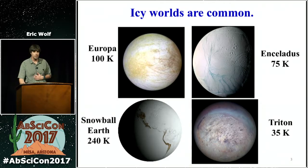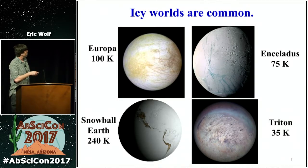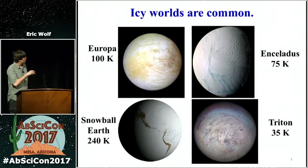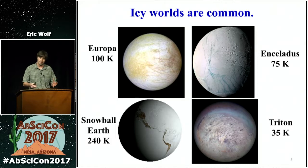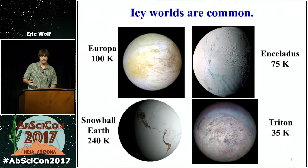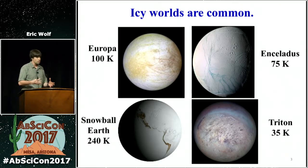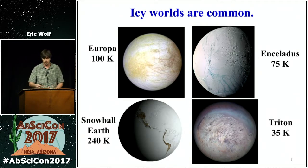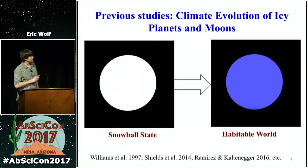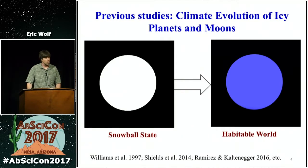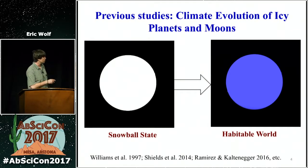So icy worlds are common. We see them in our own solar system: Europa, Enceladus, Triton. Also, the Earth is believed to have entered into snowball phases in distant times in its past, and we're going to be talking about how do you deglaciate these planets — but not via buildup of CO2, as Jacob described earlier, but rather via solar deglaciation, which for the sun is reasonable to occur because we know the sun brightens over time. Previous studies using complex three-dimensional climate models have shown that you could solar deglaciate a snowball state into a habitable world, like Shield's 2014 work.